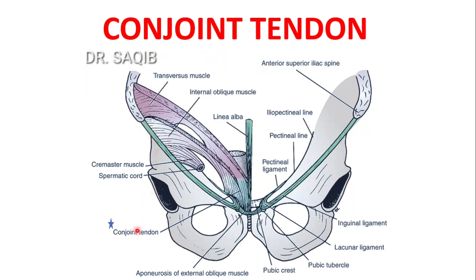This is the conjoint tendon. Follow the laser — this is the conjoint tendon, which is formed by the lower aponeurotic fibers of the internal oblique muscle and the transverse abdominus muscle. This is the transverse abdominus and this is the internal oblique muscle, and here they constitute this conjoint tendon.